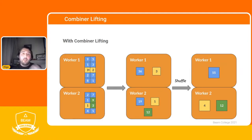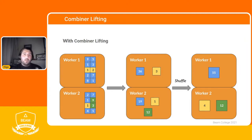Combiner lifting happens automatically in runners like Dataflow — you don't need to specify anything extra beyond the combine operation itself to take advantage of this optimization.